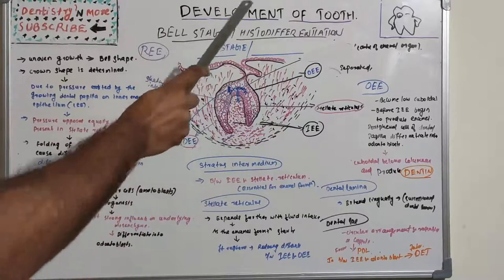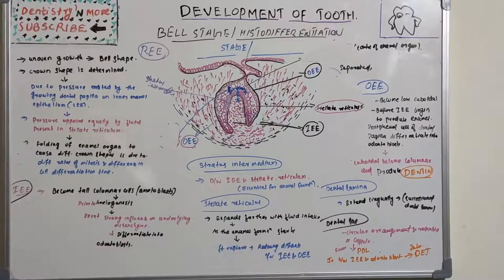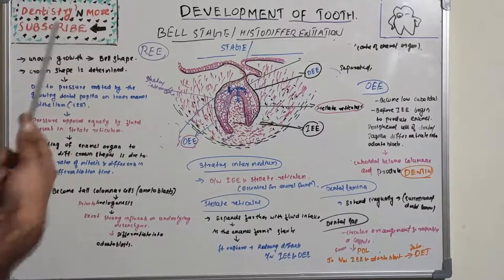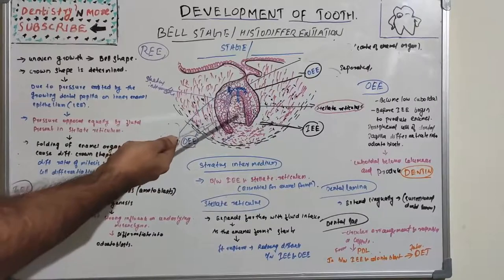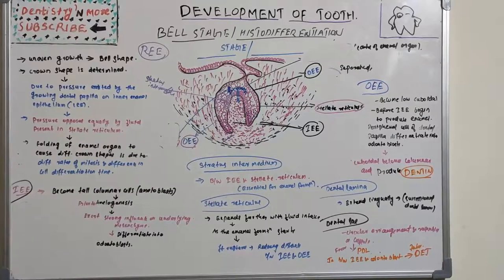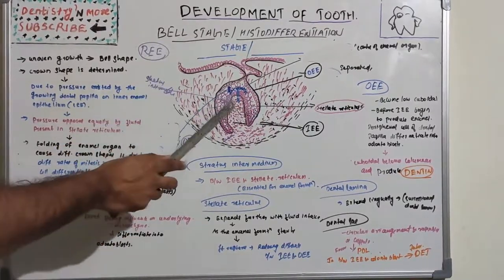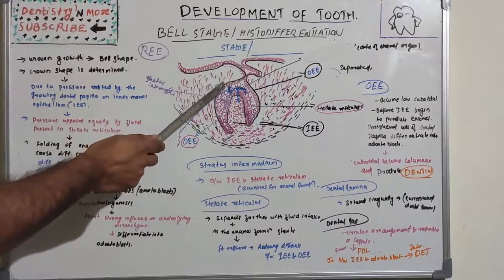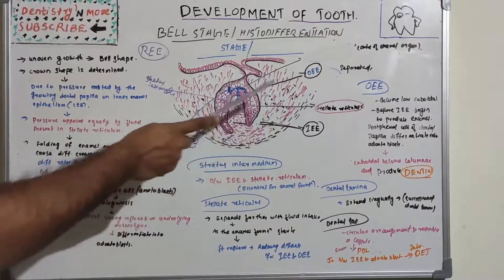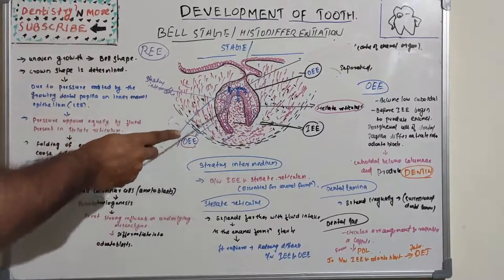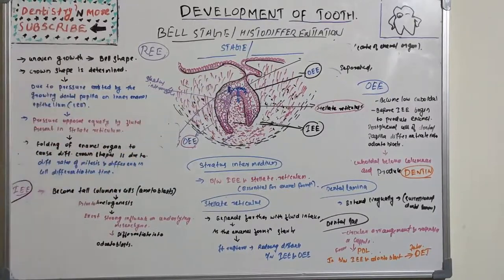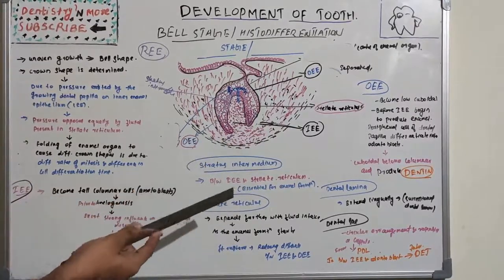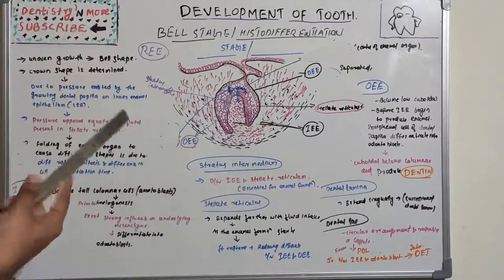In the bell stage, histodifferentiation occurs due to continued and uneven growth of the enamel organ, which takes on a bell shape. The crown shape is determined at this stage. It was thought that the shape of the crown is influenced by pressure exerted from the dental papilla on the inner enamel epithelium, balanced by opposing pressure from the stellate reticulum.